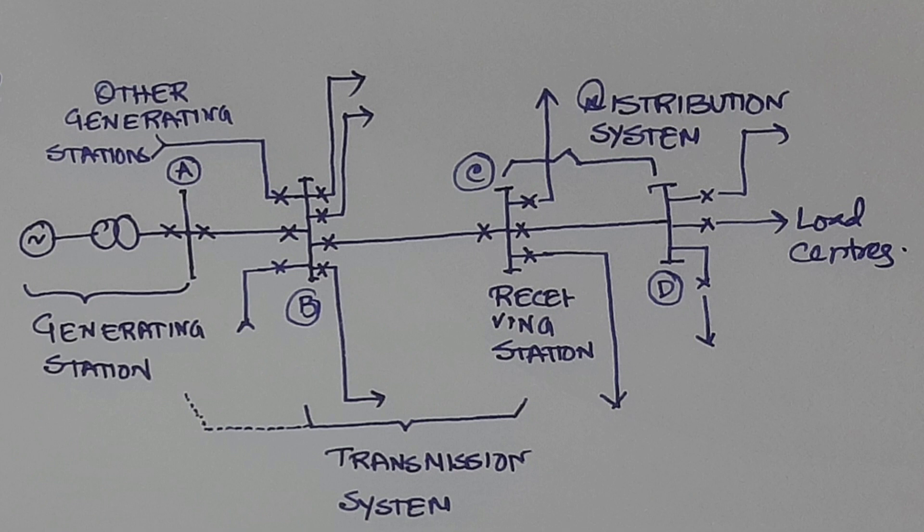At point D where I have mentioned as load center, it is generally at 11 kV and then it is further stepped down to 415 volts and further distributed. These generally do not have any fixed rule. There are many kinds of combinations possible.